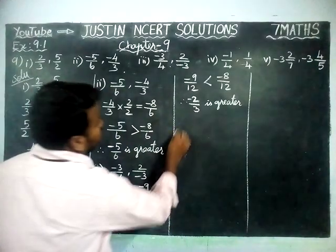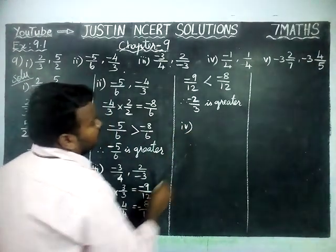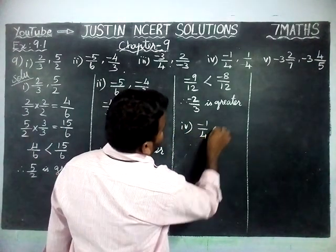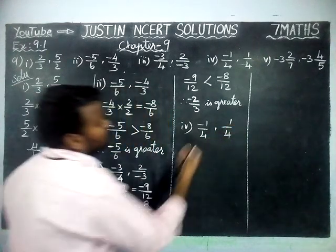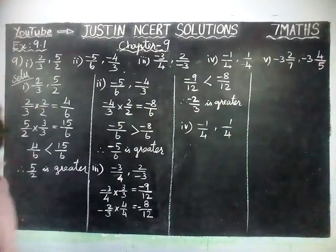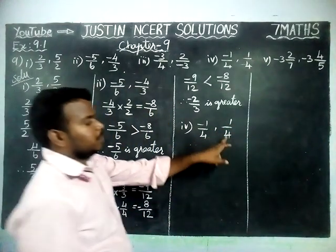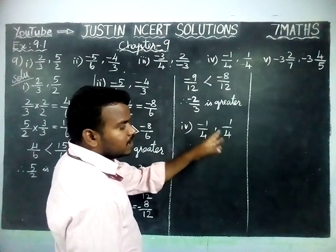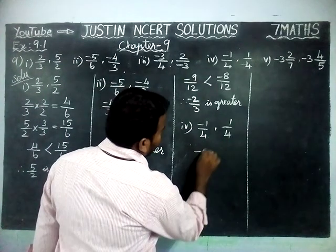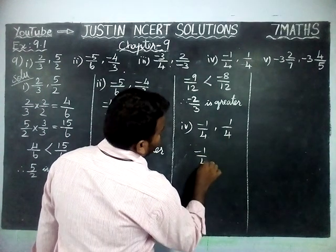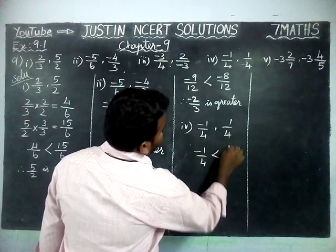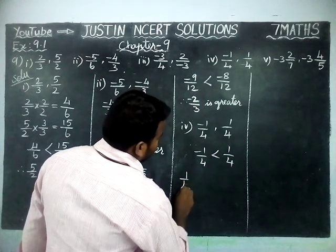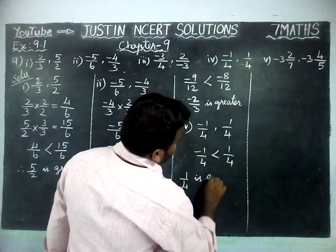The fourth question is -4 and -1/4. Here we do not have any doubt. -4 is a negative number and -1/4 is also negative, but -1/4 is closer to zero so -1/4 is greater than -4. Therefore 1/4 is greater.